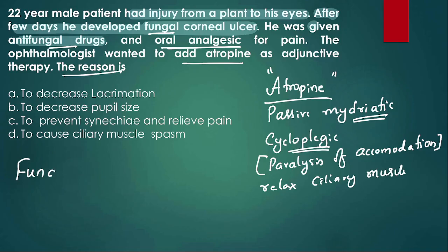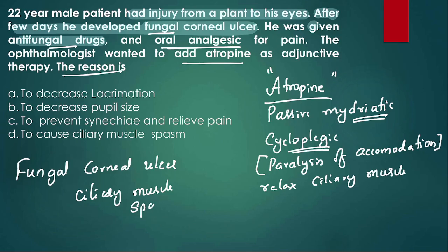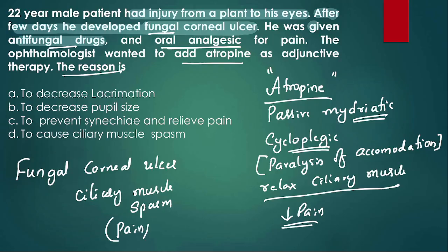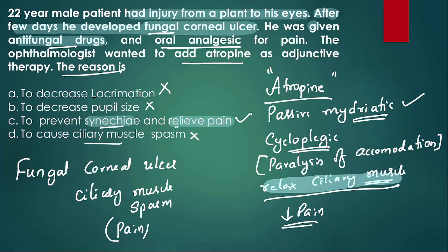In fungal corneal ulcer, ciliary muscle spasm occurs, causing pain. Atropine relaxes the ciliary muscle and reduces the pain. Reading the options: atropine does not decrease lacrimation, it increases pupil size, and it is used to relieve pain and prevent synechiae (adhesions) by relaxing the ciliary muscle.